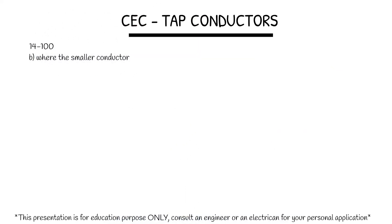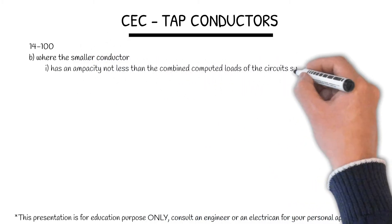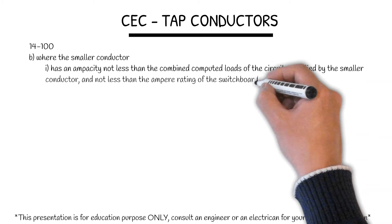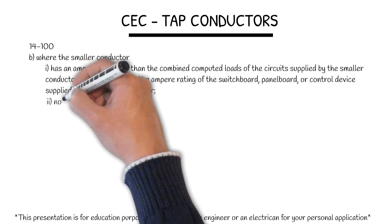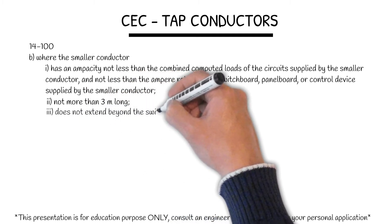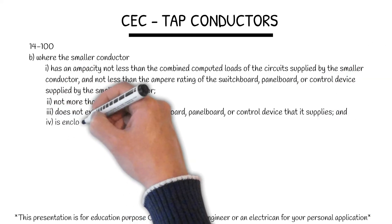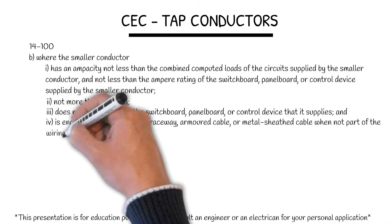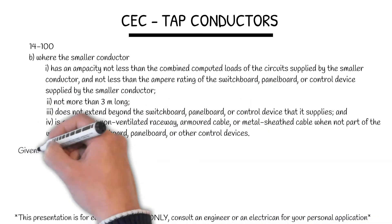14-100 Subrule B: the smaller conductor has an ampacity not less than the combined connected loads of the circuit supplied by the smaller conductor, and not less than the ampere rating of the switchboard, panelboard, or control device supplied by the smaller conductor. Not more than 3 meters long, does not extend beyond the switchboard, panelboard, or control device that it supplies, and is enclosed in a non-ventilated raceway, armored cable, or metal sheath cable when not part of the wiring in the switchboard, panelboard, or other control devices.